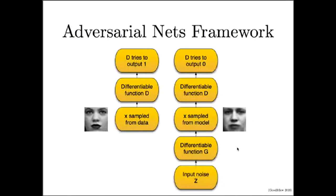The way that generative adversarial networks work is by making two different networks play a game against each other. One of them is called the discriminator network, and it can look at both real or fake data and output a probability that is trying to estimate whether that data is real or fake.